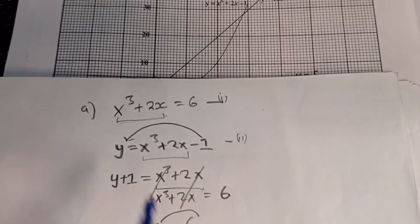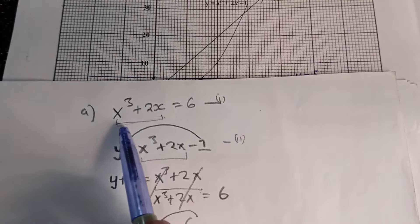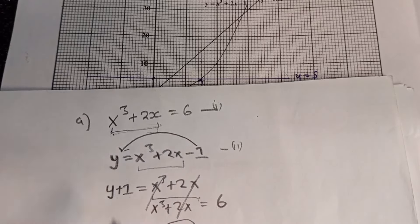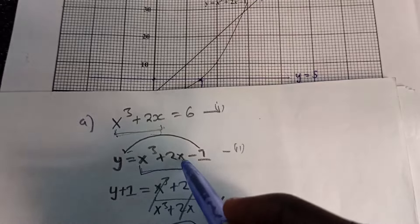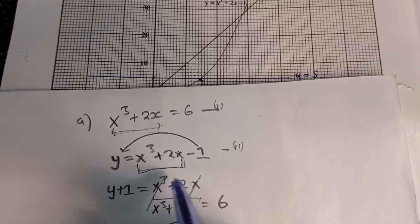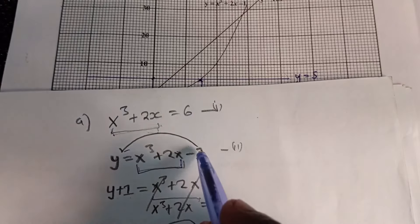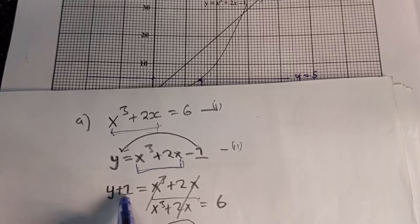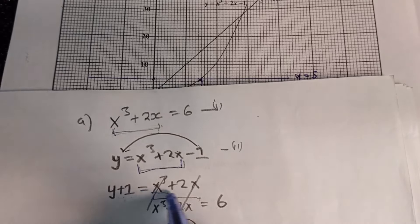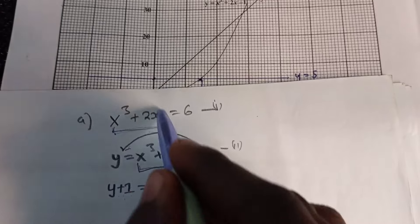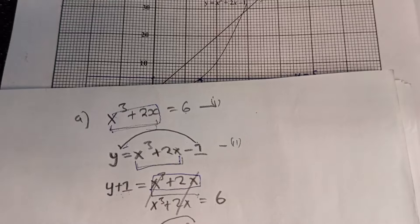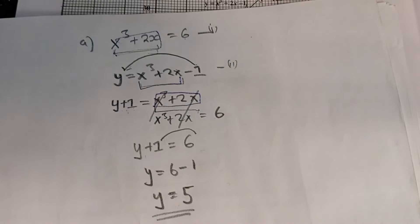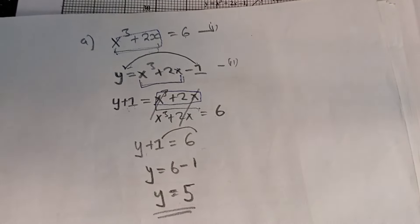To review how we solved question A: we had x³ + 2x = 6. We modified the curve equation y = x³ + 2x − 1 by moving the −1 across, giving y + 1 = x³ + 2x. Substituting the equation gave y + 1 = 6, so y = 5. We then read x ≈ 1.5 from the graph.